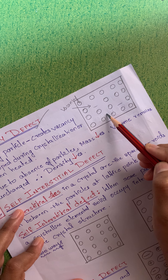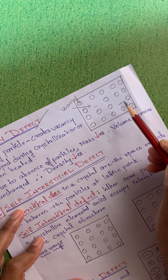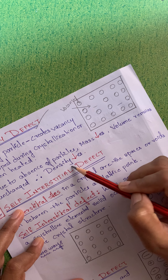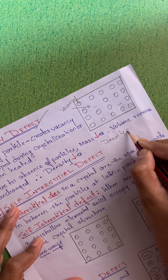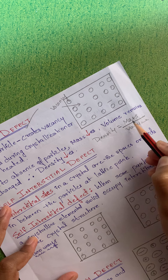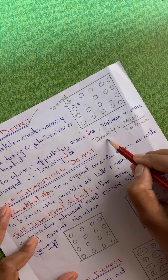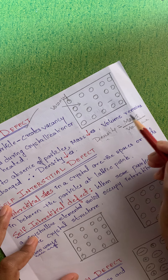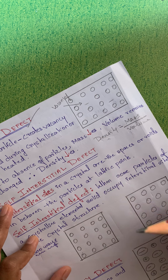Stoichiometric point defects are of four types. The first is vacancy defect. As the name suggests, vacancy means there will be some empty space in the crystal. In a crystal formed of constituent particles, if a particular position is vacant — the particle is missing from its lattice point — that leads to a vacancy defect.